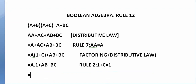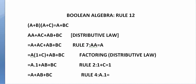Then A·1 will always be equal to A. This is according to Rule 4, because whenever we AND any variable with 1 that will always equal the variable. So it is going to be equal to A or A·B or B·C. Here we have applied Rule 4 of Boolean algebra, wherein A·1 = A.